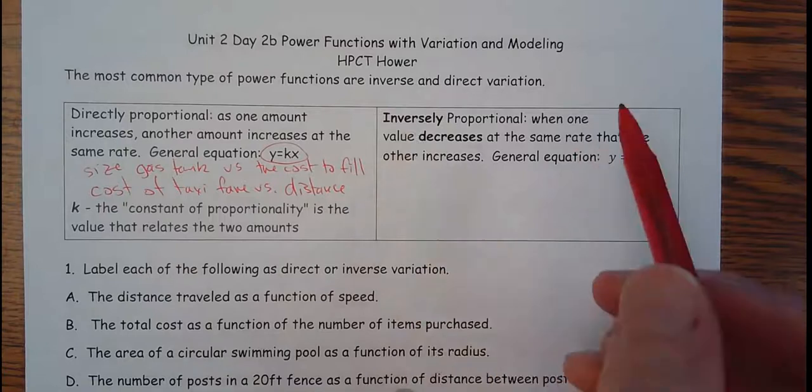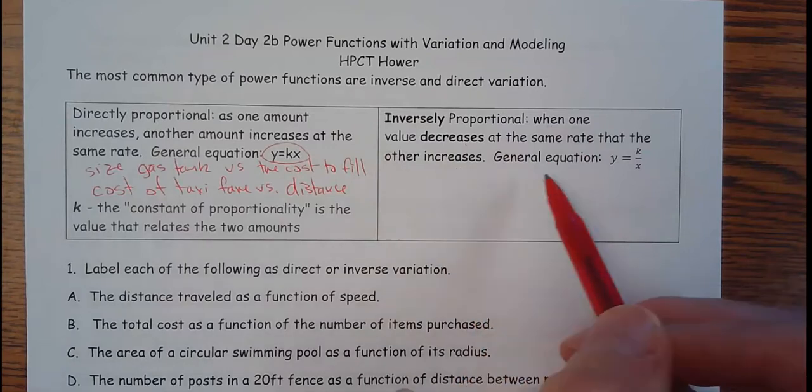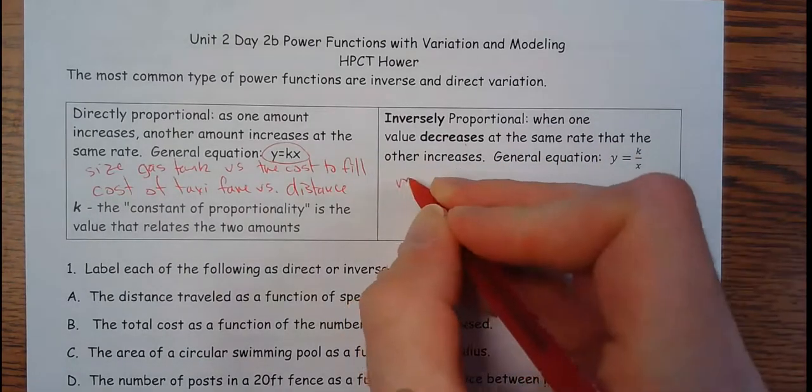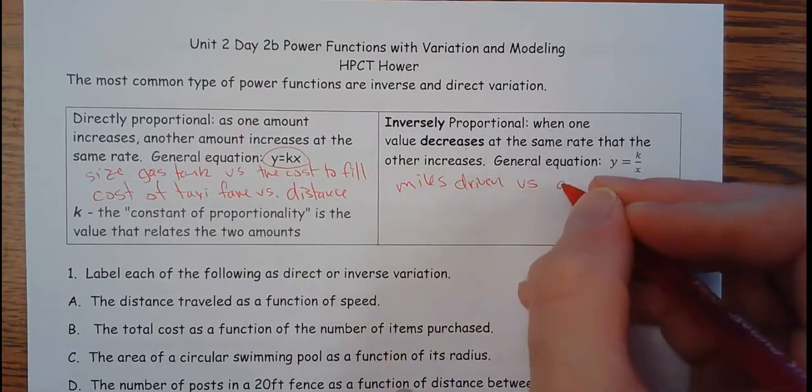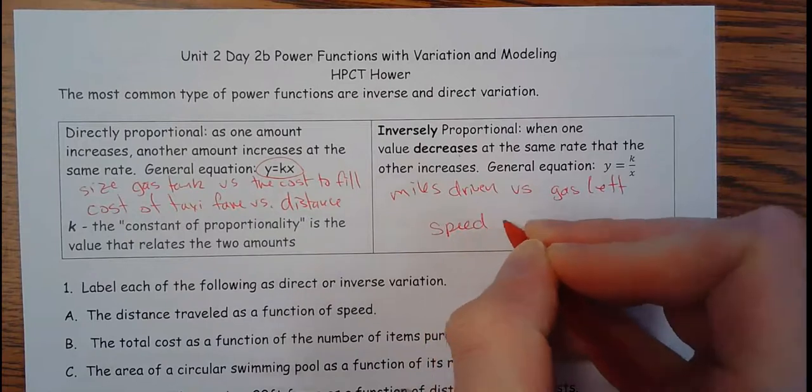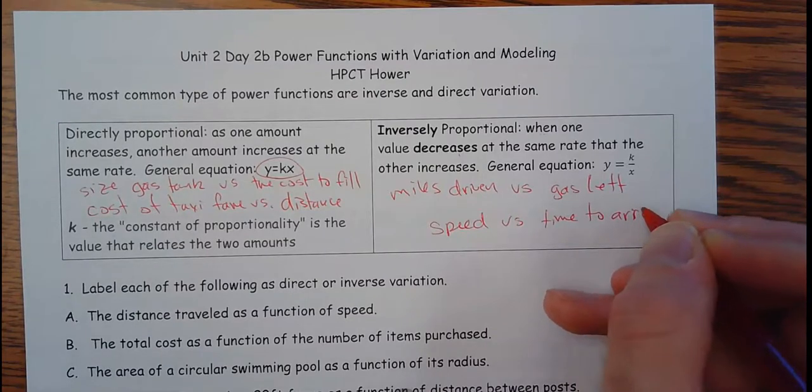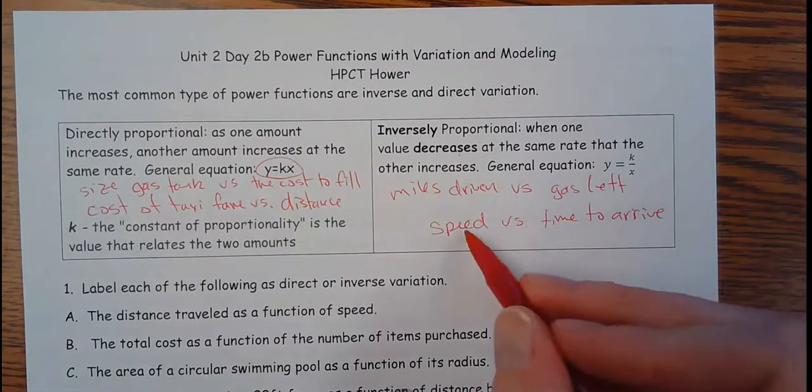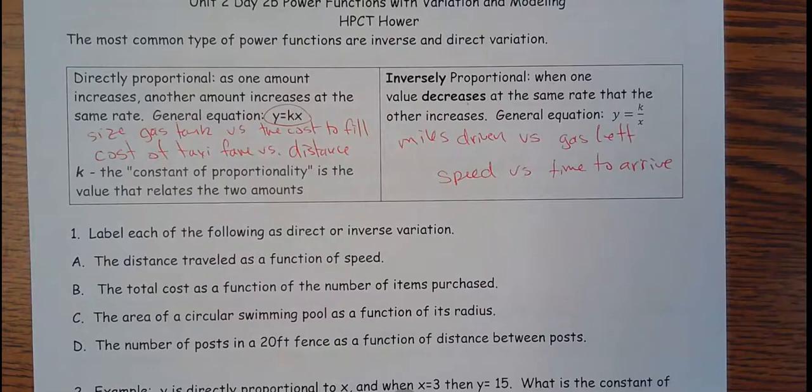Now, inversely, it's kind of the opposite. It means when one value decreases at the same rate that the other one increases. These are a little bit harder to find, but you might say the miles driven in a car compared to the gas that's left. So the more miles you've driven since your last fill-up, the less gas you have left. So as one goes up, the other goes down. Or speed versus the time to arrive. So the faster you go, the less time it takes to get there.